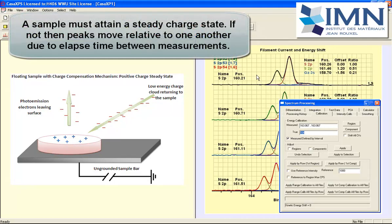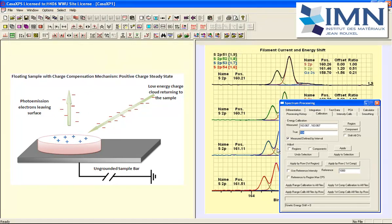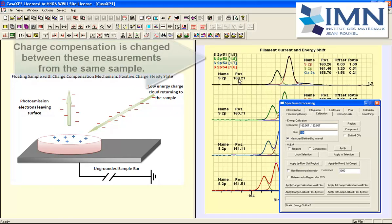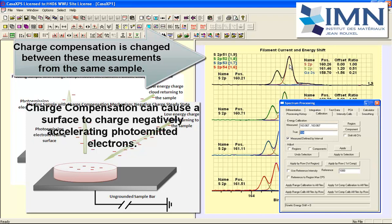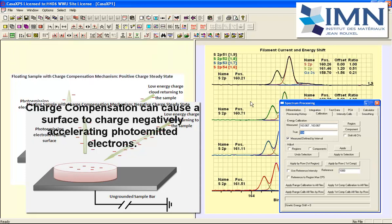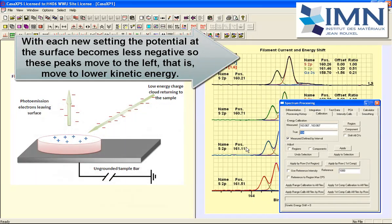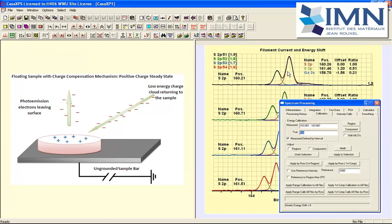Now these spectra have been measured using different charge compensation states and you can see simply by looking down this list here that the position for this sulfur 2p peak is changing with each different setting for the charge compensation.